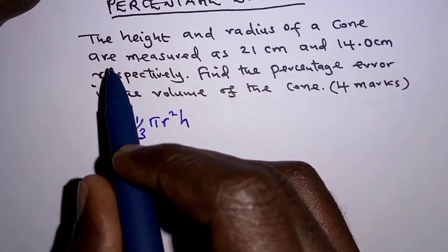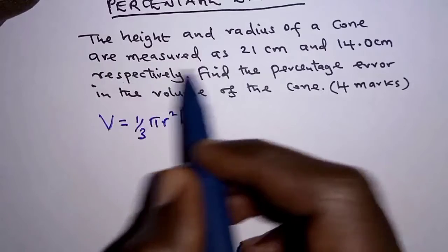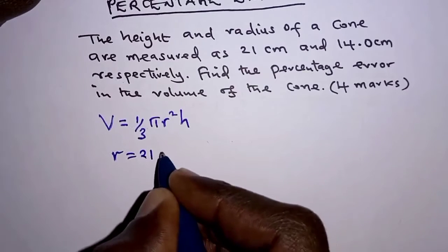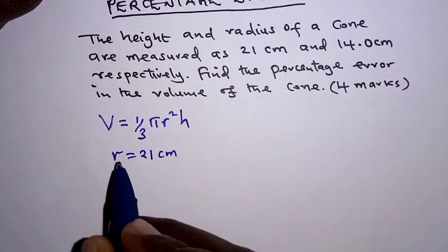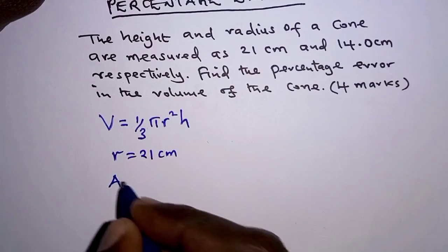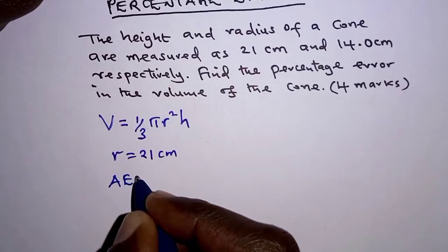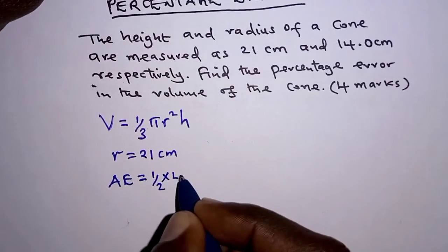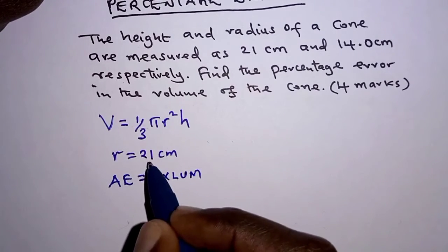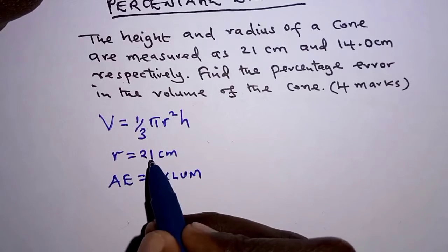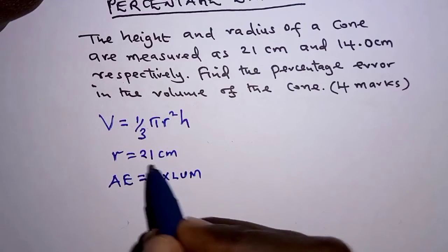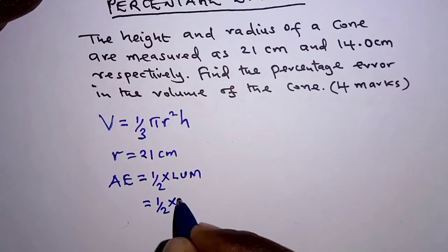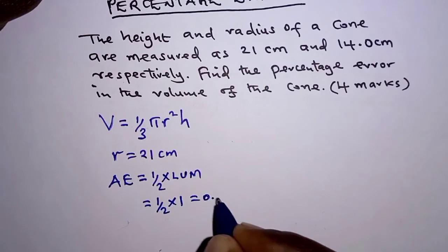We are given the measurements of this cone. We are told that the radius of the cone is 21 centimeters. We want to determine the absolute error for this measurement. The absolute error is obtained as half times the least unit of measurement. The measurement is to the nearest centimeter, that is, to the nearest whole number. Therefore, the least unit of measurement is 1. So we multiply half times 1, and that is 0.5.